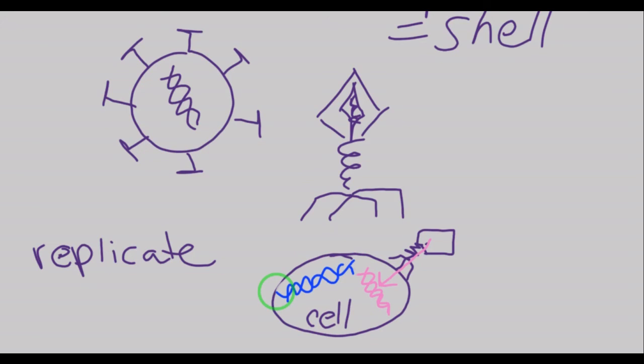And so when this new DNA or RNA gets injected into the cell by the virus, the cell just makes more of it. And so this cell is going to just start replicating this DNA or RNA from the virus. And so one of the reasons that a virus is not considered alive is because it can't replicate without this other cell from something else.